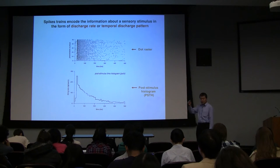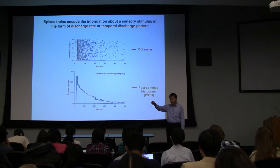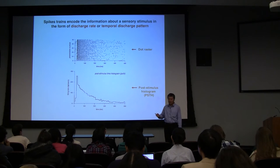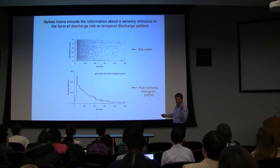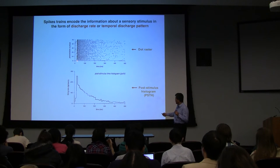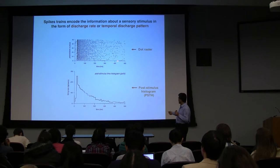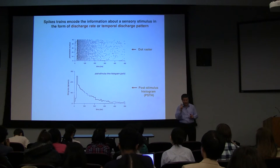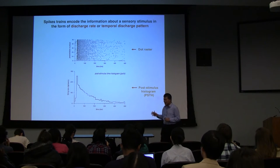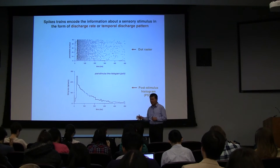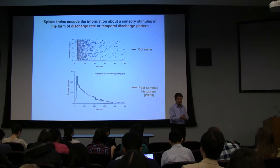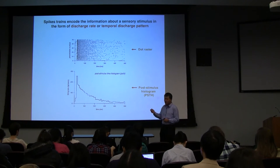Suppose we do the following experiment: we put an electrode in the part of the brain that responds to sound — the auditory brain — and record action potentials while playing a sound once, say for half a second. You'd have a string of action potentials. After signal processing, you extract the timing of each action potential and plot it as a dot. Action potential spike trains are not a deterministic process — they are a stochastic process.